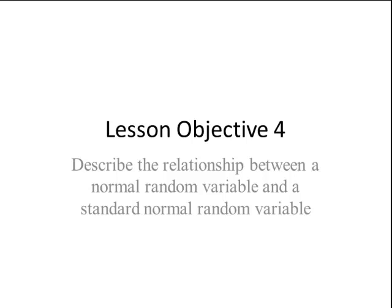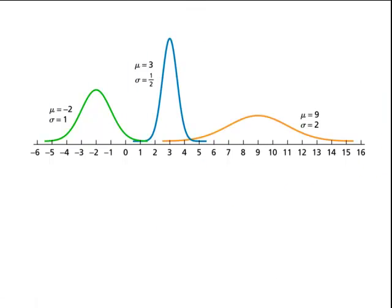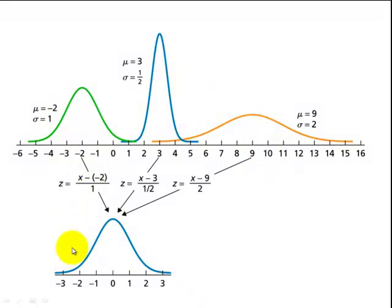Lesson objective number 4: standardizing a normal random variable. This is done using a z-score — we take our random variable, subtract the mean mu, and divide by the standard deviation sigma. The standard normal distribution has a mean of 0 and a standard deviation of 1, written as N(0,1). The z-score changes all different normal distributions — with different means and standard deviations — into the standard normal, so all means become 0 and all standard deviations become 1.